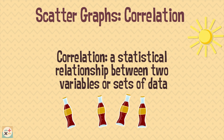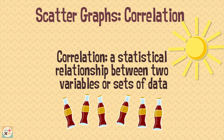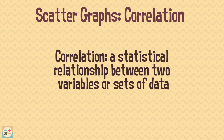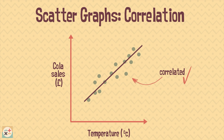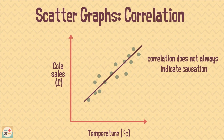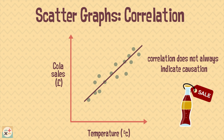For example, cola sales increasing as the temperature increases. This information can be visually represented on a scatter graph. If we can draw a line of best fit, then we can say that cola sales and temperature are correlated. However, it's important to remember that just because two things are correlated doesn't always mean that an increase or decrease in one thing has caused the increase or decrease in the other. In this example, we can't be certain that the increase in temperature has caused the increase in cola sales, even though it may seem likely. There could have been a discount or offer on the price of the cola on the day the data was collected, which could have been the cause for the increase in sales. Therefore, correlation does not always indicate causation, so it's important to consider other factors.